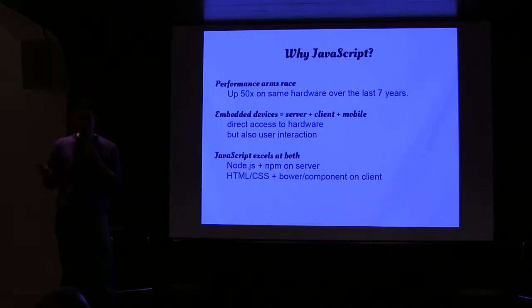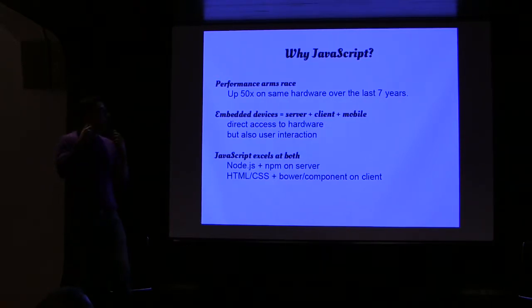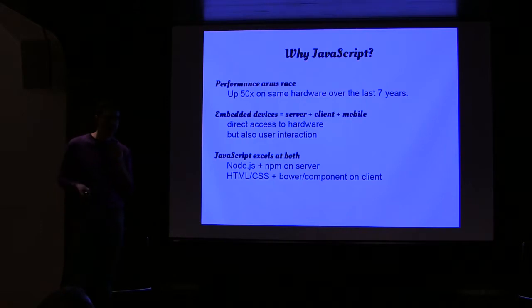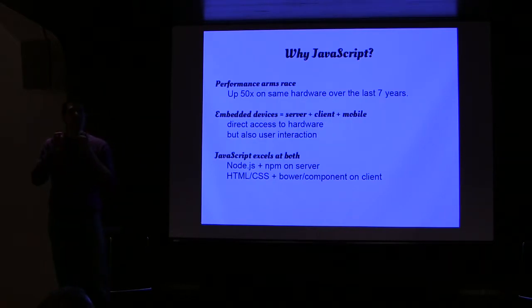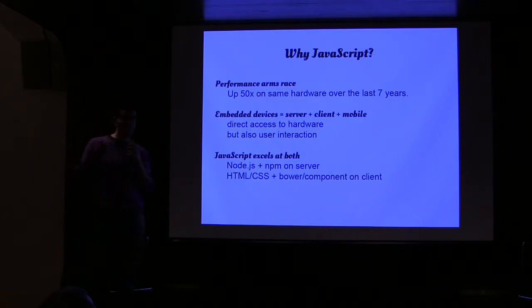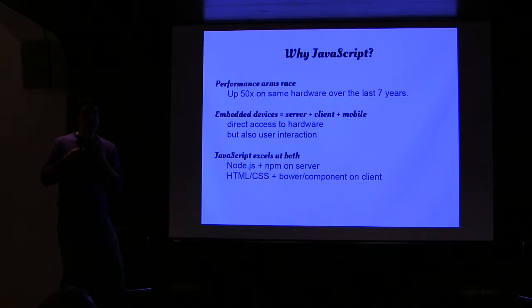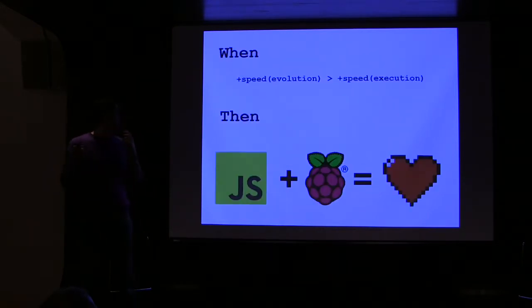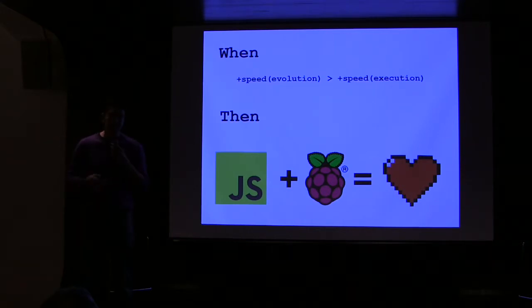The language we're focusing on — and some people love it, some people hate it — is JavaScript. The reason is that JavaScript has actually got a lot of performance these days; it's not the JavaScript of 2006. Embedded devices are a very weird hybrid: you need access to the hardware, which is like being on the server; sometimes you need to interface with a user, which is like being in a browser; and the development cycle looks like a mobile device. The only language with a good story across all of those scenarios is JavaScript. When the speed of evolution becomes more important than the speed of execution, JavaScript and embedded devices can work really well together.